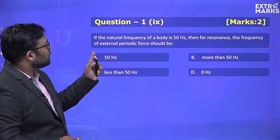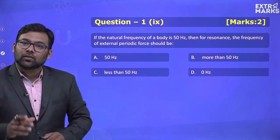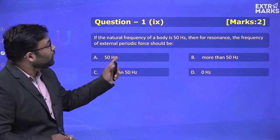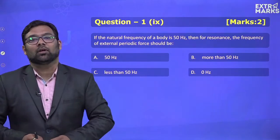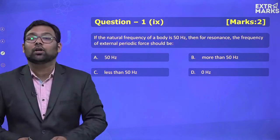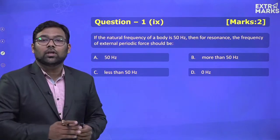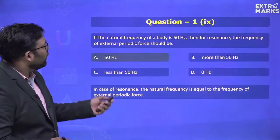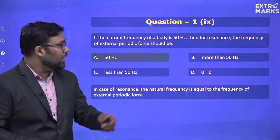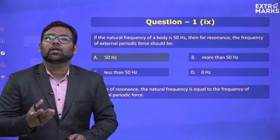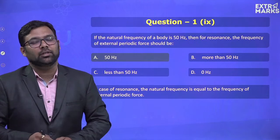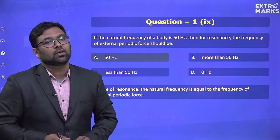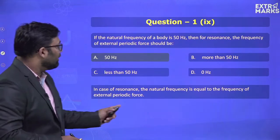There is a question about natural frequency and resonance. If the natural frequency of a body is 50 Hz and you want resonance to happen, the frequency of the external periodic force must equal the natural frequency — also 50 Hz. This is a direct, easy question you should identify quickly in your exam, so your crucial time is reserved for more important questions.